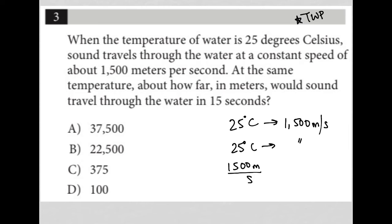But I want to know how far—the unit meters—it will travel in 15 seconds. So I need to multiply this by 15 seconds, so that the seconds cross out and I'm left with 1500 times 15.